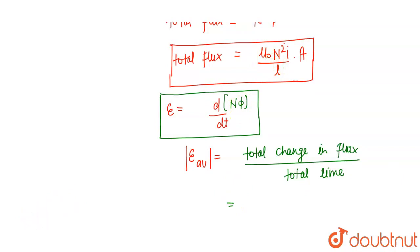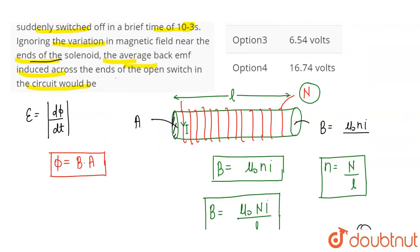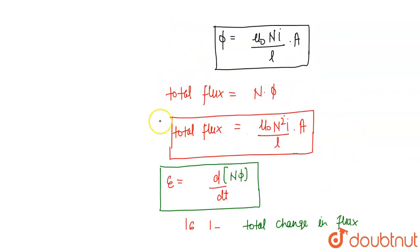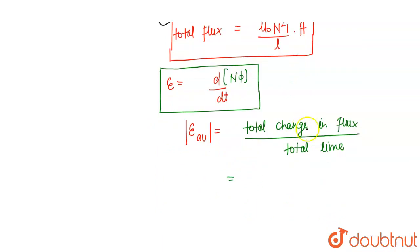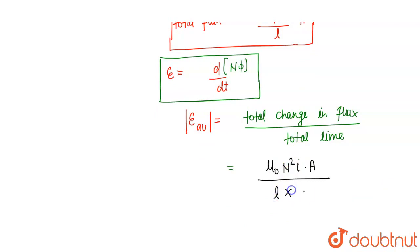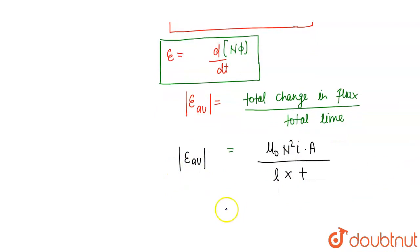The total change in flux: initially the current I was flowing, then after t = 10⁻³ seconds the current is stopped. Initially the flux was μ₀N²IA/L; when current becomes zero, the flux becomes zero. So the total change in flux equals μ₀N²IA/L. Putting values: μ₀ = 4π × 10⁻⁷, N = 800, so N² = 800 squared.